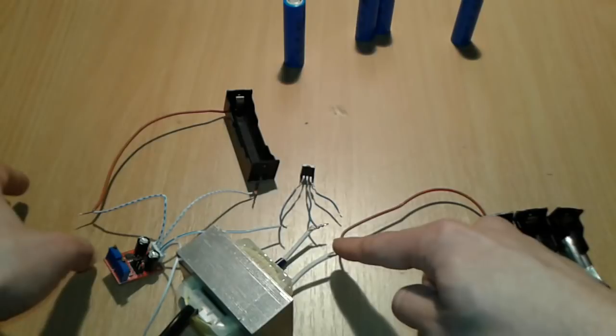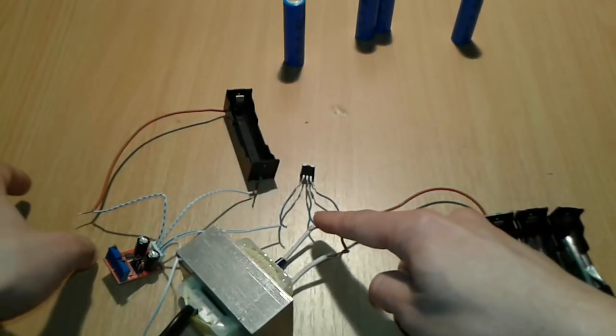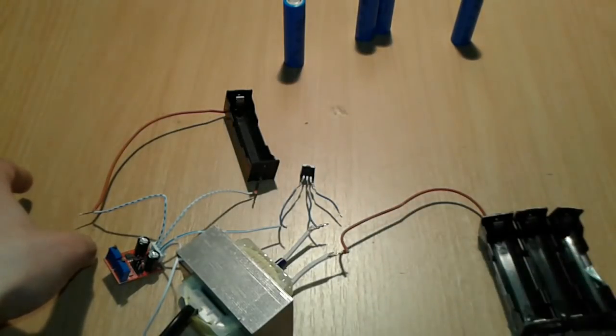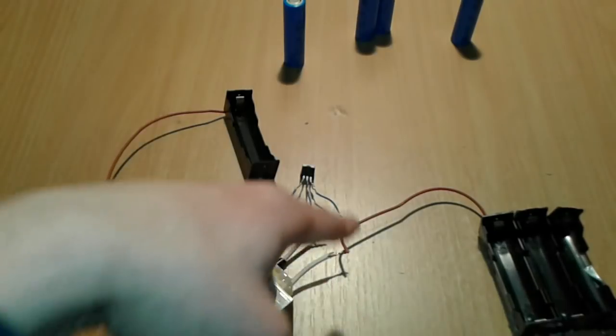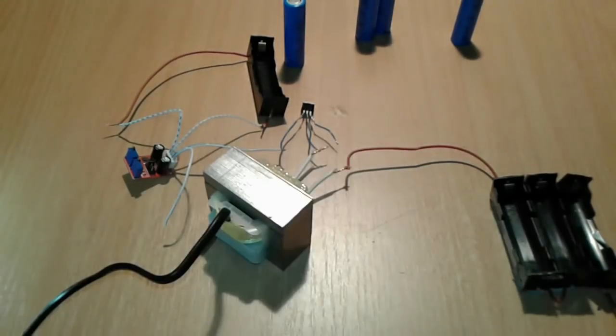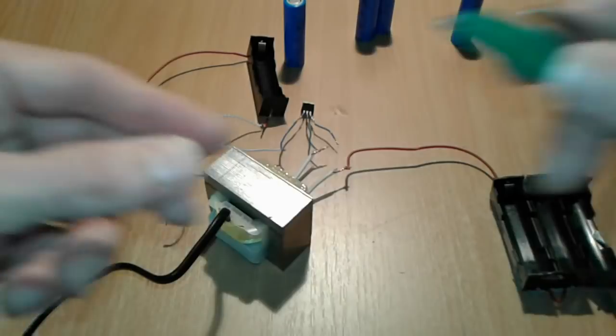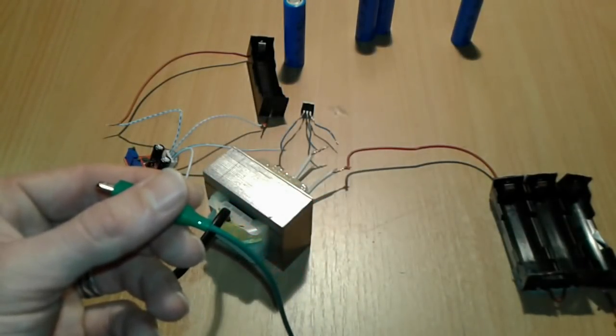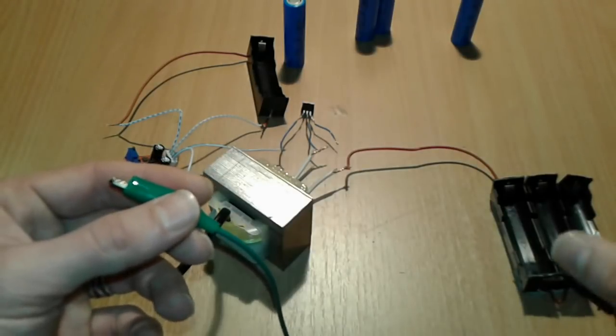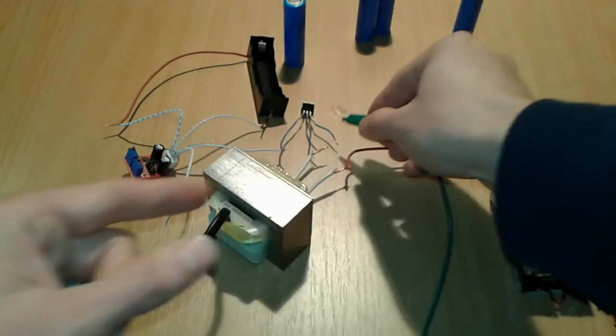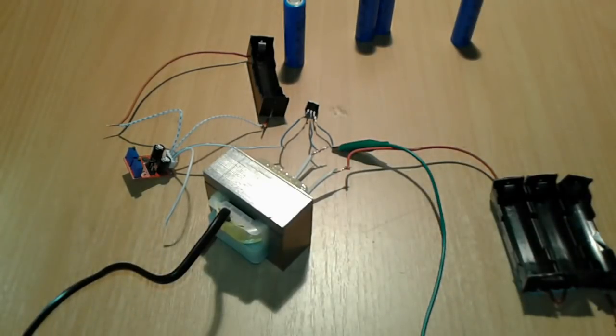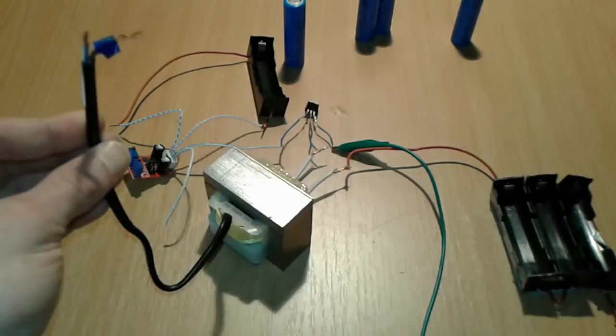And we're going to have to put one crocodile clip from here to here. The last terminal is going to go from here, which is our negative terminal - could be battery, could be power supply, could be anything - to this terminal of the MOSFET.